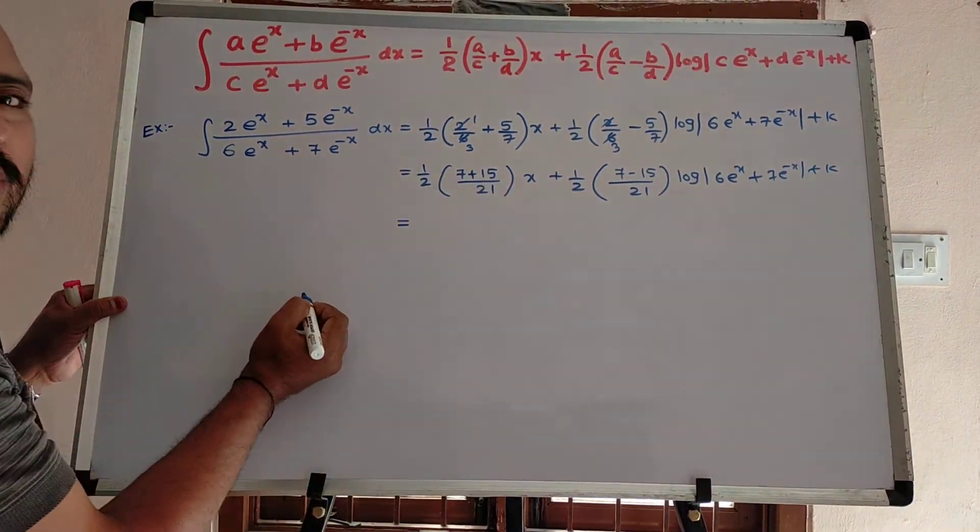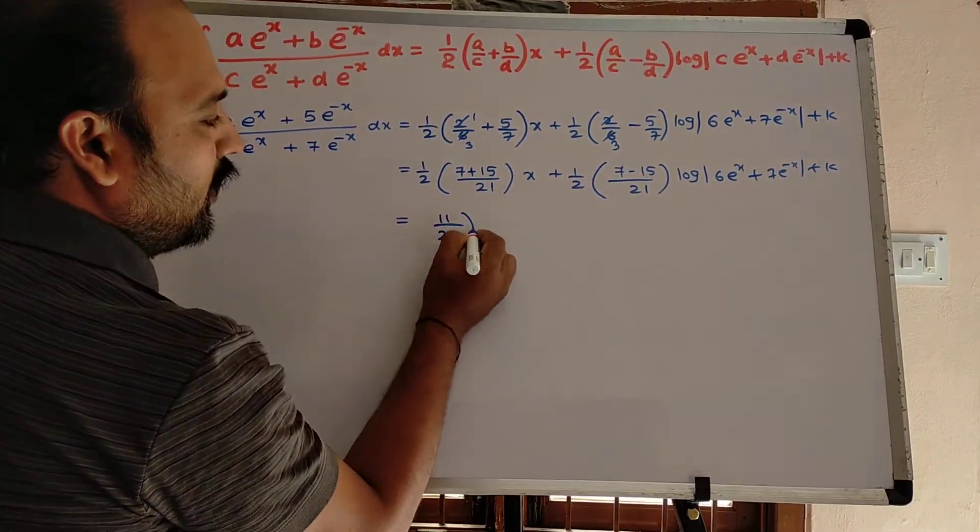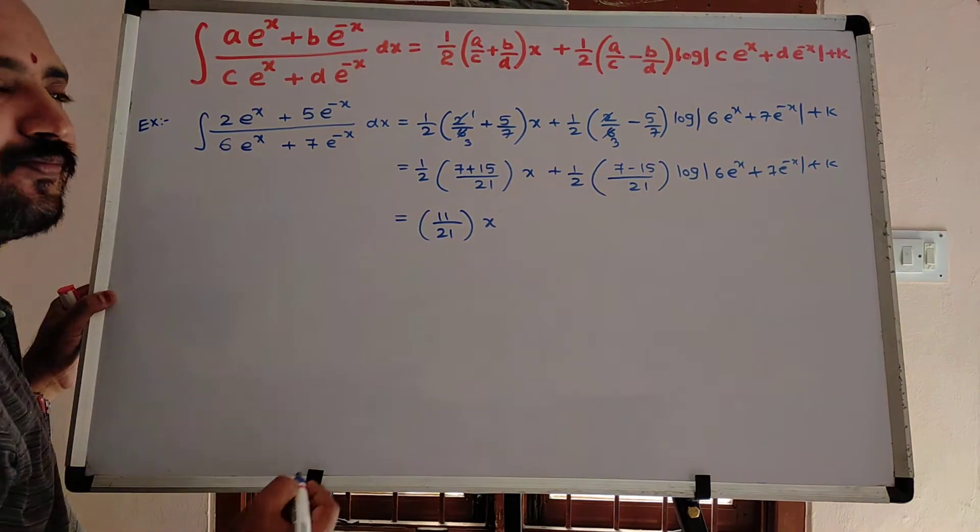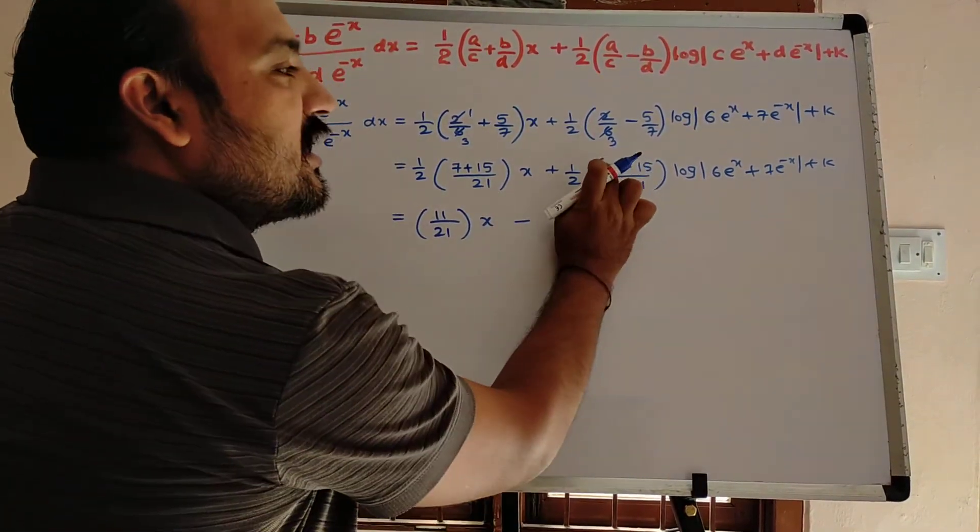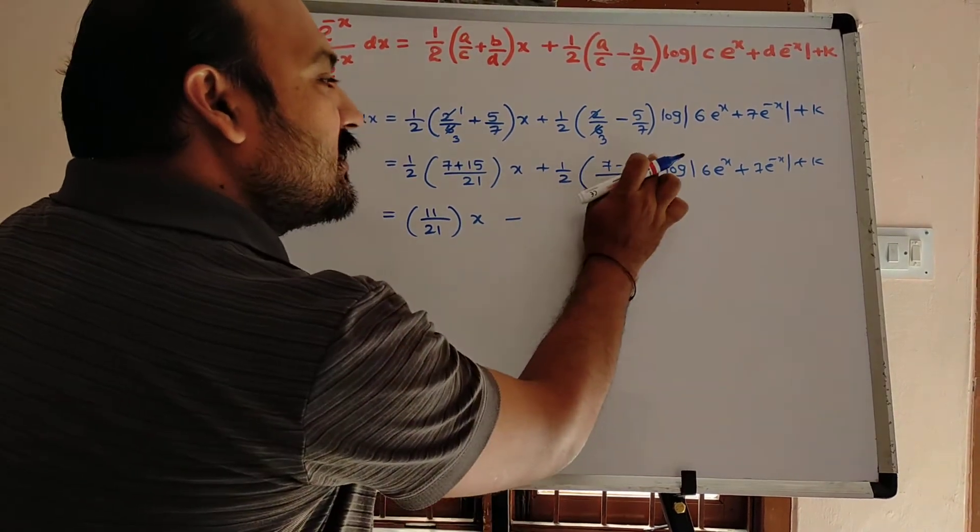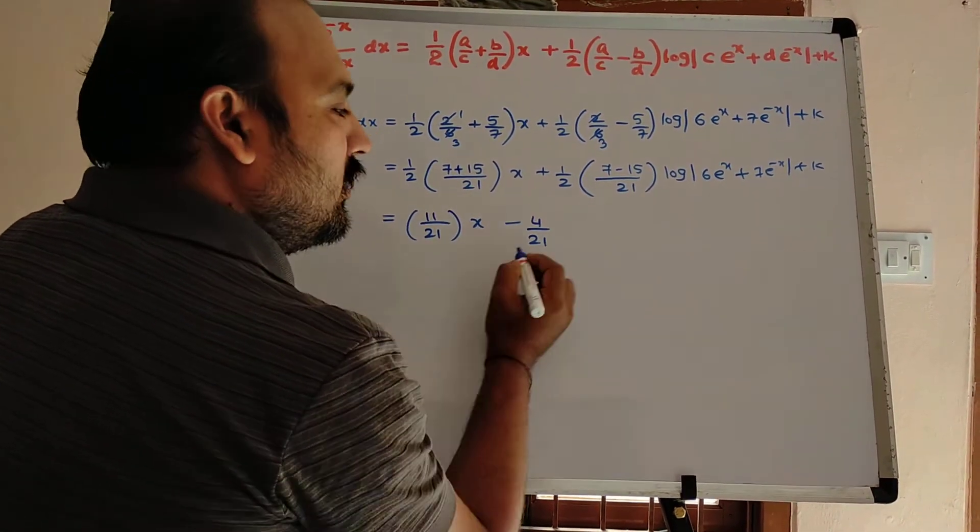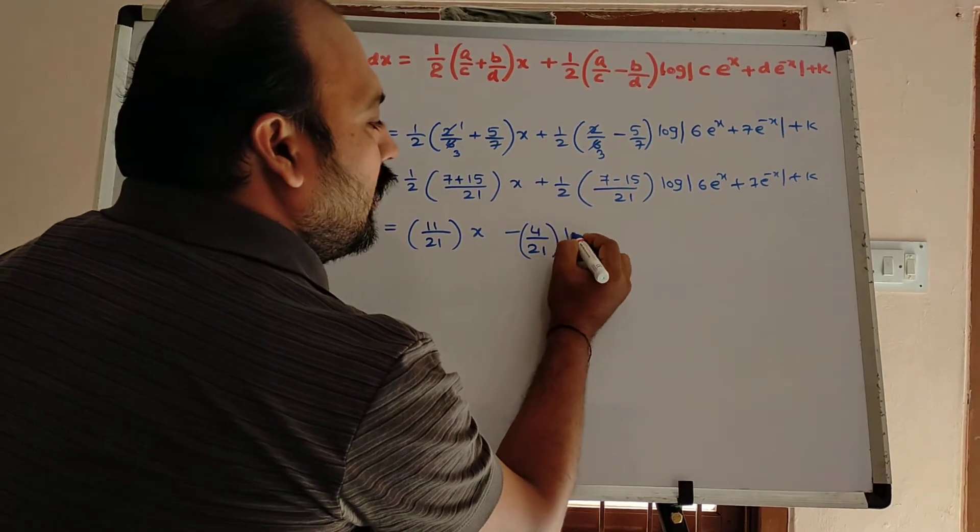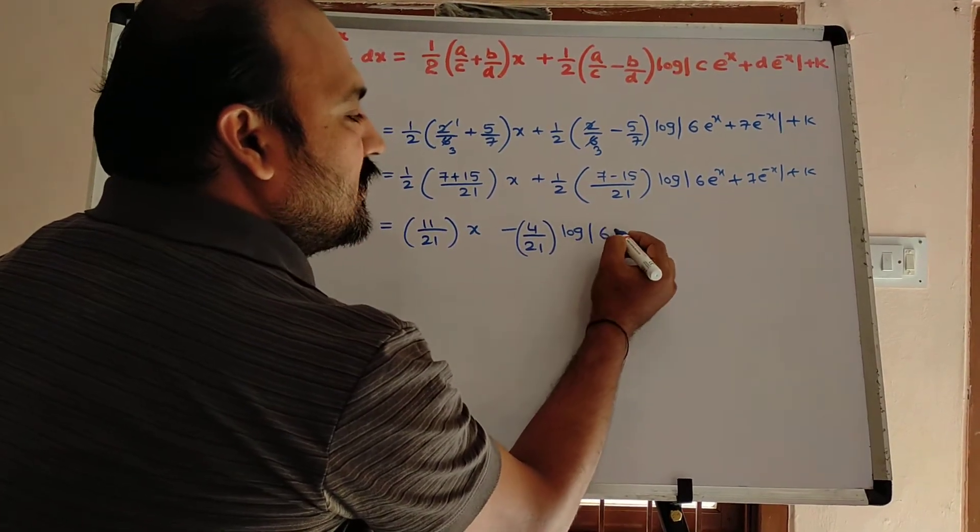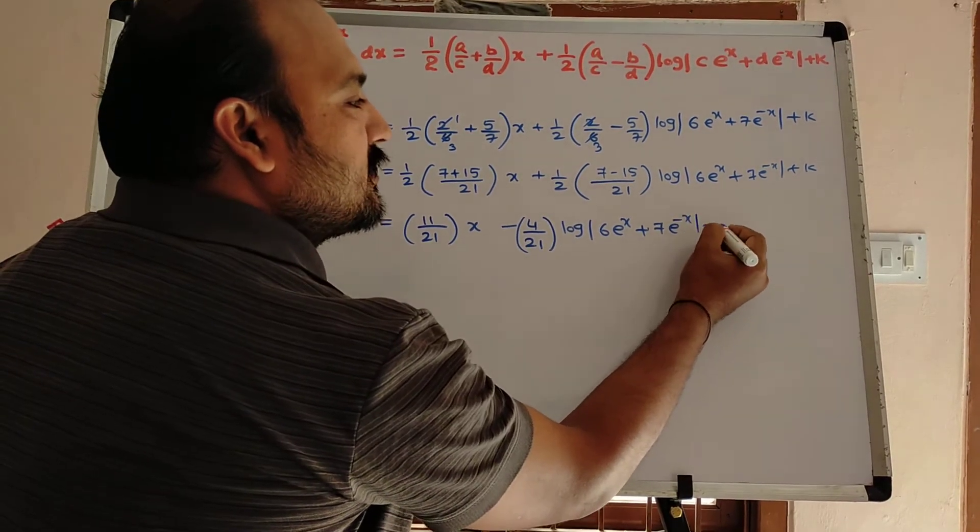Equal to 15 plus 7, 22, 22 by 2, 11 divided by 21 into x plus 7 minus 15 is minus 8. So, minus 8 by 2 minus 4, minus 4 by 21 into log mod 6 e power x plus 7 e power minus x plus k.